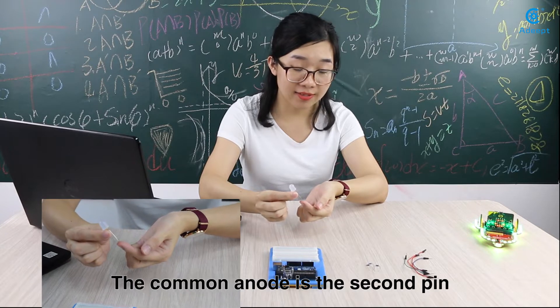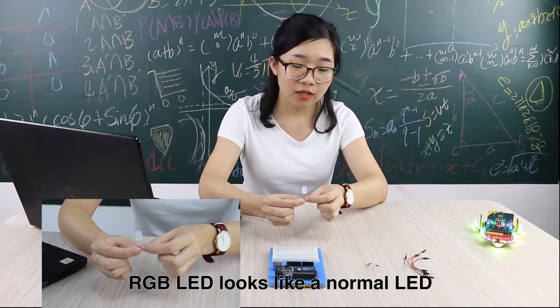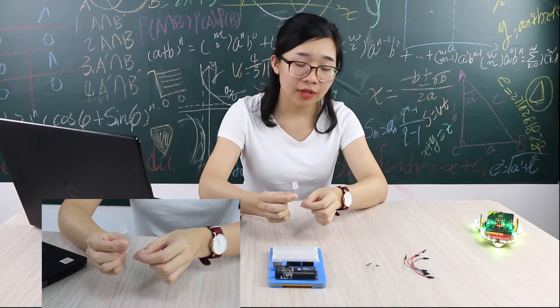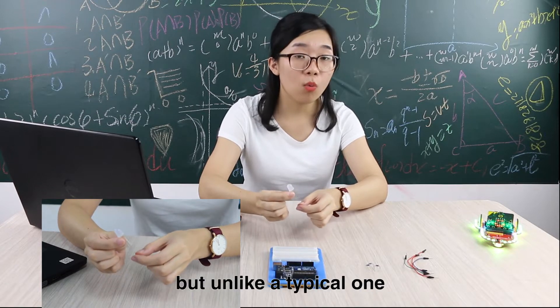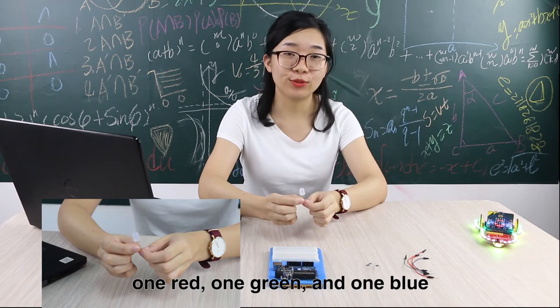The common anode is the second pin and also the longest pin. RGB LED looks like a normal LED, but unlike a typical one, it packs with 3 LEDs: one red, one green, and one blue.